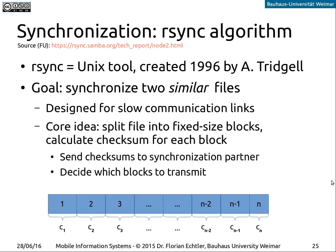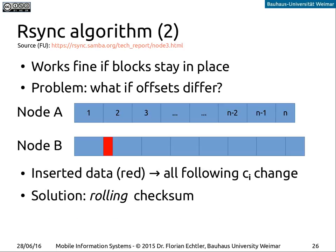This works as long as the blocks are where you expect them. If you have something like a log file where data is only ever appended at the end, this will work fine. But if we now insert some data at some point into the file, the following blocks will shift. If I now calculate the checksum over this new file at node B, the checksum will still be calculated based on the old positions, causing all checksums except the one for block one to mismatch, and a lot of data would have to be transferred.